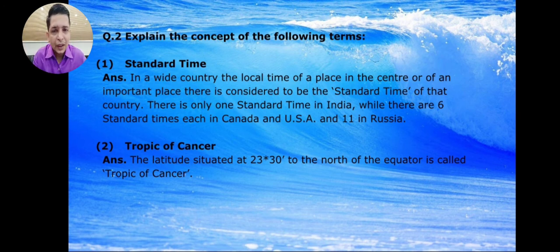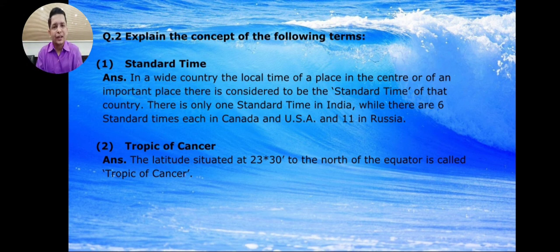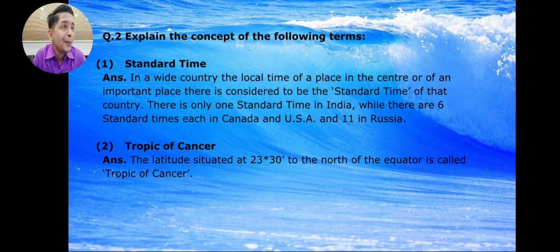India's longitude ranges from approximately 68 to 97 degrees east. If we find the center, that is roughly 82.5 degrees east, which is India's standard meridian. That longitude passing through a central city becomes India's standard time. Since India is not a very large country in east-west spread, it uses one standard time.